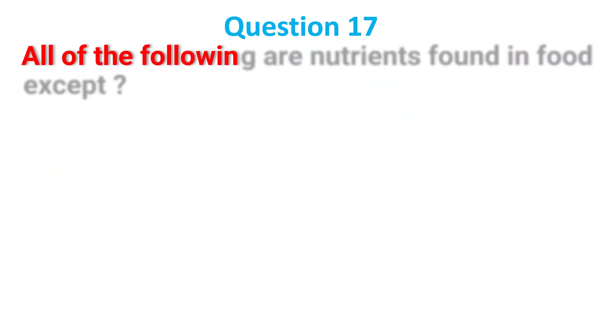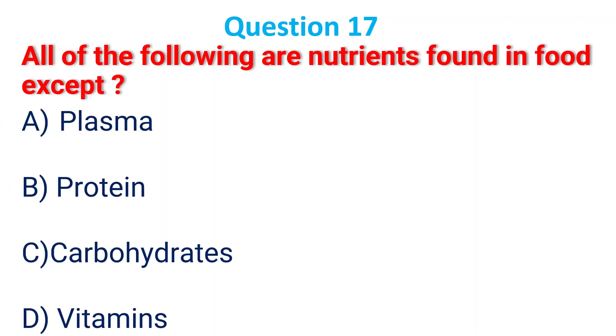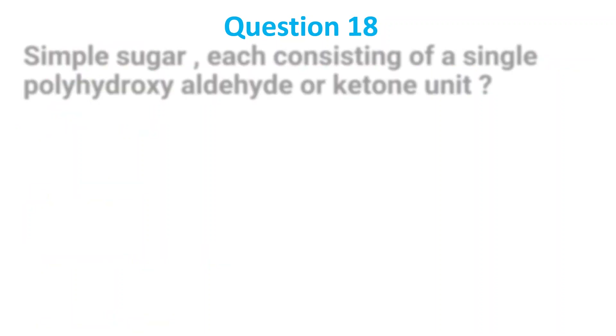All the following are nutrients found in food except: A. Plasma; B. Protein; C. Carbohydrate; D. Vitamins. The answer is A, plasma.